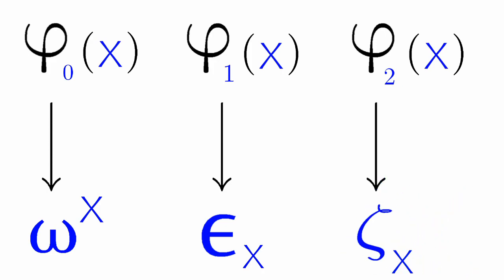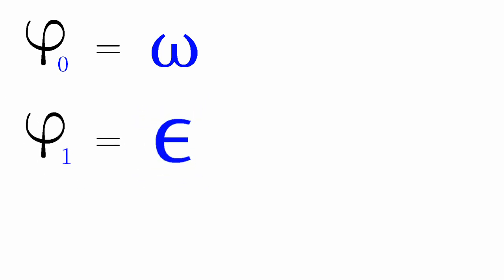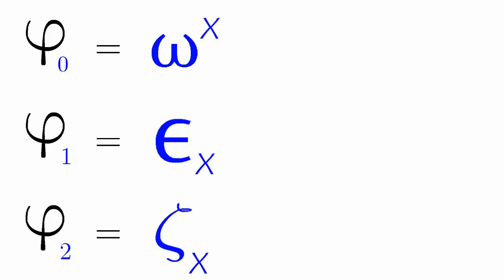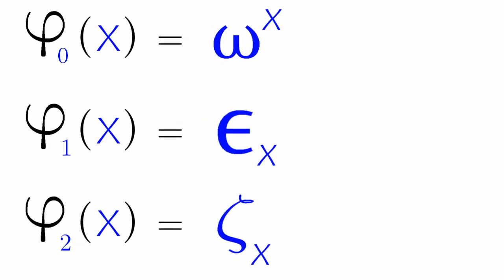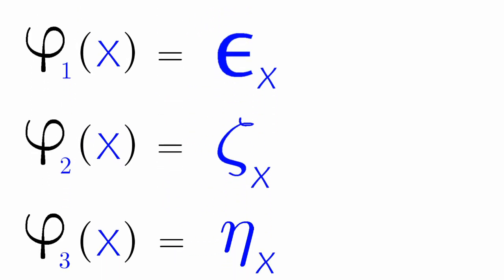To recap all of this: Phi 0 is equal to Omega, Phi 1 is equal to Epsilon, Phi 2 is equal to Zeta, and don't forget their index. Phi 3 is equal to Eta.